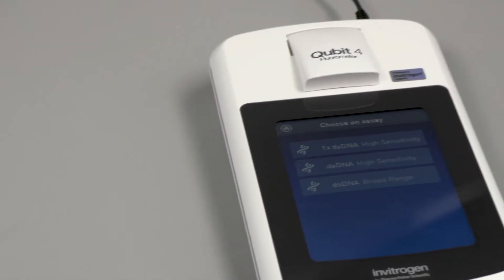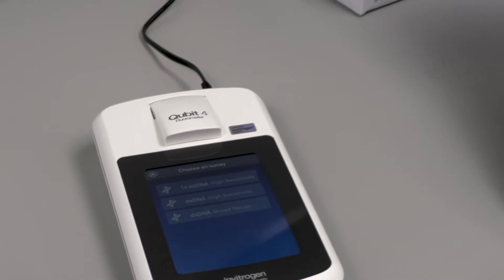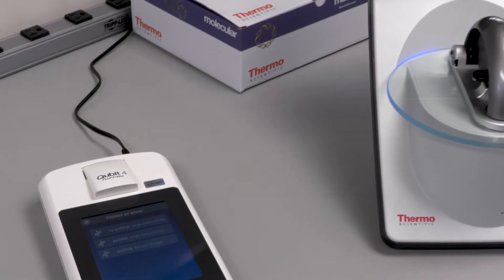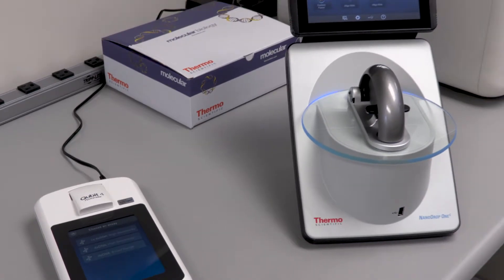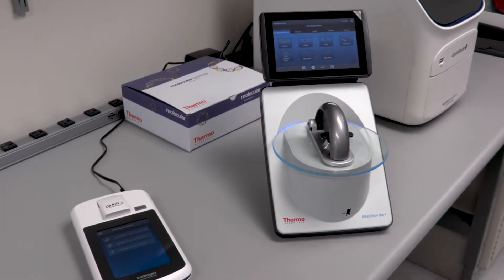Using a combination of the NanoDrop 1 spectrophotometer and Qubit 4 fluorometer provides the researcher the most accurate quantitation as well as identification of contaminants that can affect reaction efficiencies.